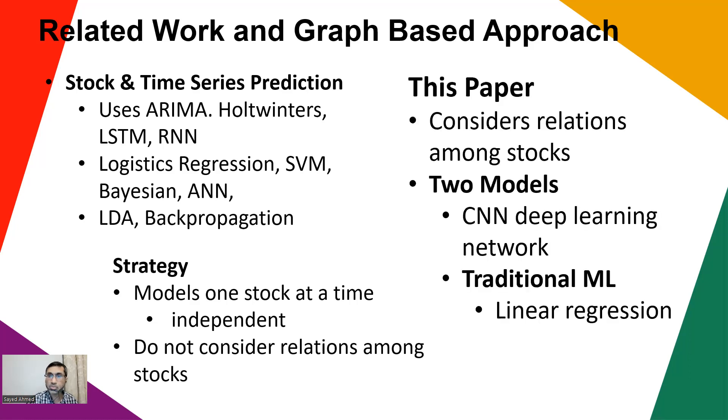These are independent models. They do not consider the interaction among these different stocks - that's the limitation. Now what does this paper do? This paper considers relations among those stocks in the corresponding model, and they propose two different models: one is CNN-based deep learning network, and another is traditional machine learning-based linear regression model. They claim that both of these methods have achieved better performance than the traditional approaches.